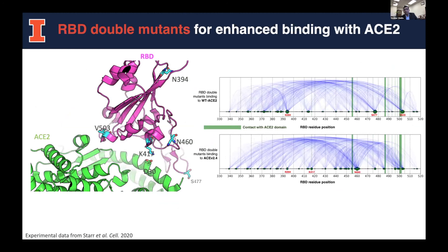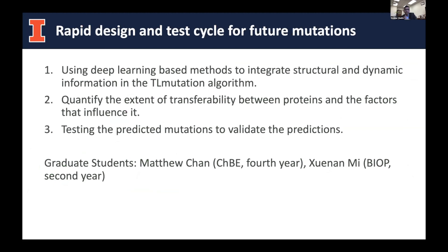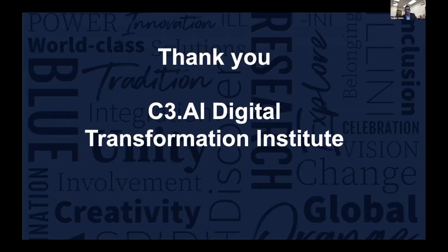We have now done the same for the coronavirus RBD domain and can predict mutations that could bind humans more strongly — mutations you might hear about six months from now. We now have a rapid design-test cycle for any future mutations that appear, and can potentially produce neutralizing proteins quickly. I want to thank my graduate students Matthew Chan and Shwen, funded through C3.ai, who did all this wonderful work. Thank you to C3.ai for supporting this research.